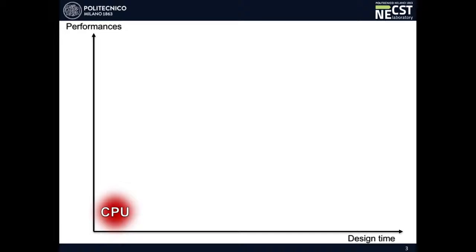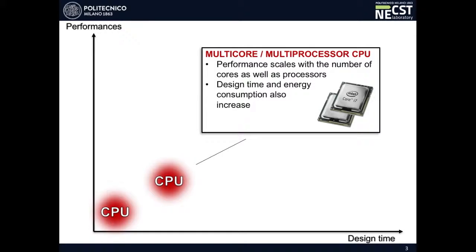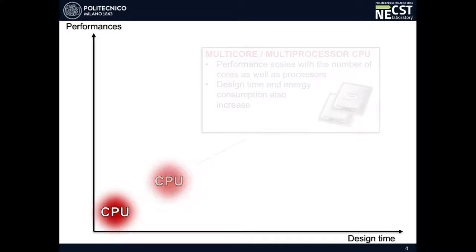First step toward high performance computing is the exploiting of multi-core and multi-thread architecture. This is done trying to parallelize critical parts of the process, compensating in this way the lack of performances due to the sequential execution of operations typical of single-thread CPUs. But commonly, the more performances you want, the more design time you need and also the more energy consumption you have. Anyway, the effort spent is not so worth, then let's see if we can do better.